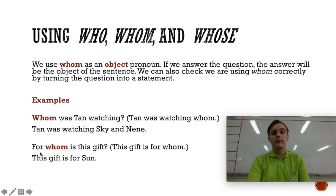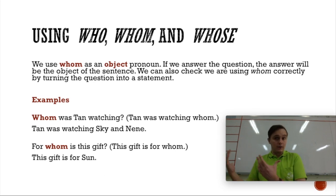Again, for whom is this gift? This gift is for whom? This gift is the subject. Whom is the object. This gift is for Sun. The gift is the subject. Sun is the object. So, who is a subject pronoun. Whom is an object pronoun. And like I just said at the beginning of the video, people often use who and whom interchangeably. They usually just say who. Lots of people would say who was Tan watching? Who is this gift for? But they would be wrong to do that. You should say whom when it's going to be the object of the sentence. So, you may even sometimes catch me or your other native speaking teachers using whom incorrectly. So, watch out for that.